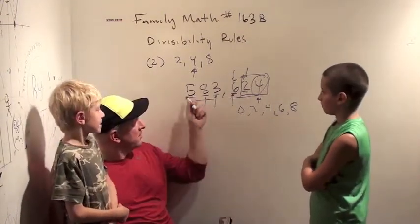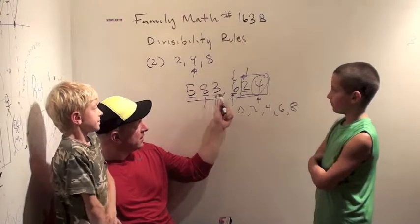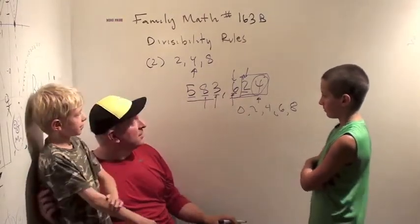Yeah, so it turns out this number 583,624 is divisible by 4. Now what about 8?